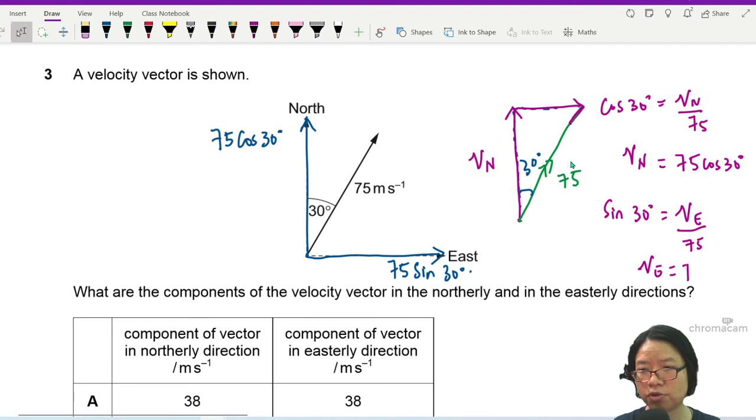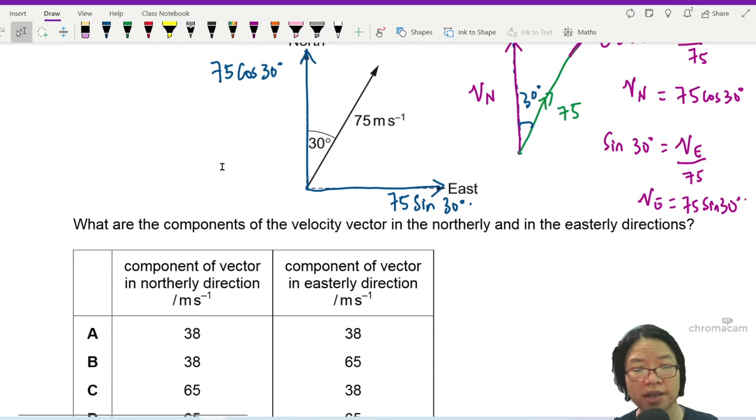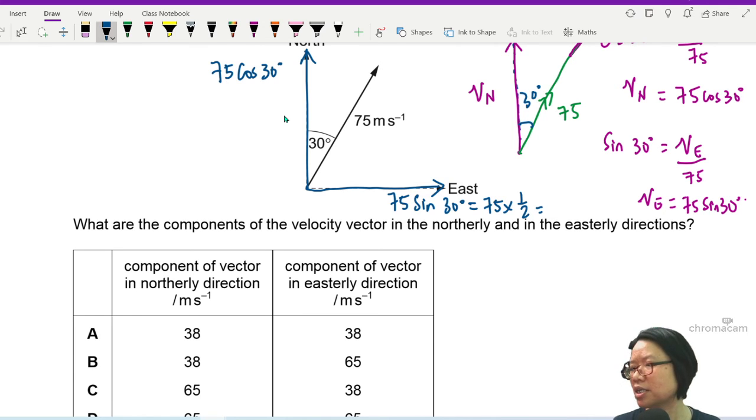This is pretty straightforward in case you need a refresher, but if not, you may be able to just press your calculator and proceed. In fact, I can proceed very quickly because 75 sin 30 is 75 times half, and this will give me 37.5.